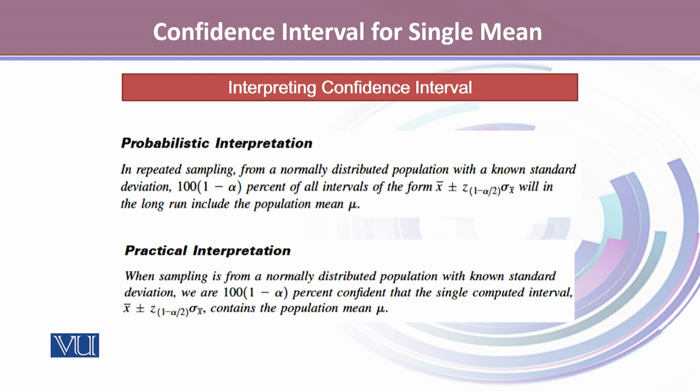In repeated sampling from a normally distributed population with known standard deviation, 100(1-α)% of all intervals of the form X̄ ± Z_(1-α/2)σ_X̄ will, in the long run, include the population mean μ.